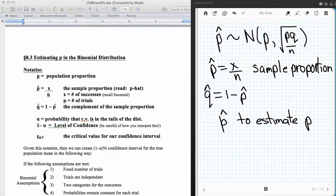All right, this is going to continue confidence intervals, and this time we're talking about estimating the population proportion for a binomially distributed random variable.